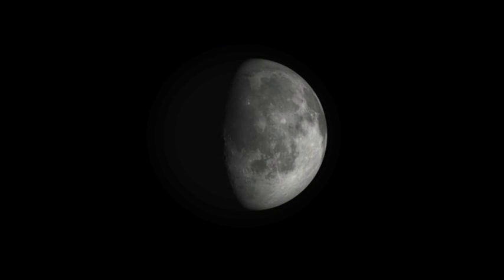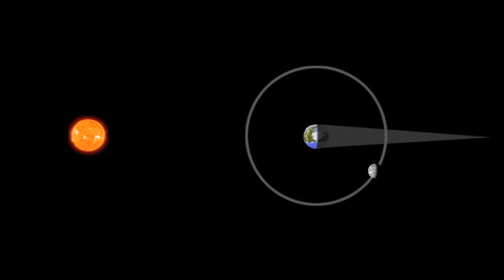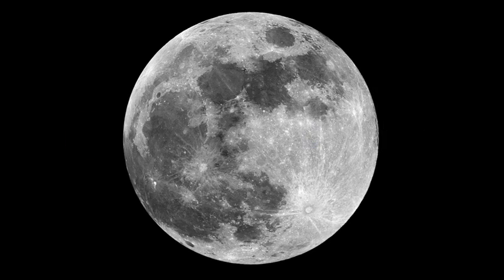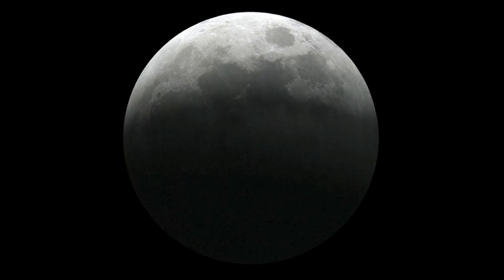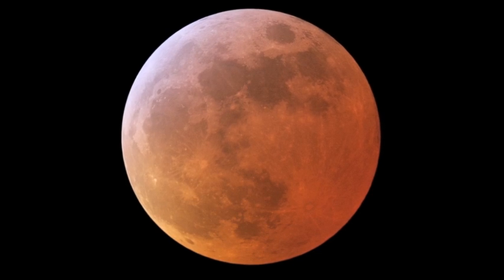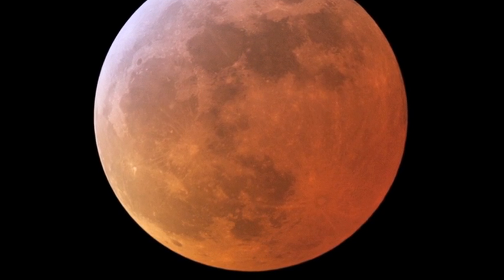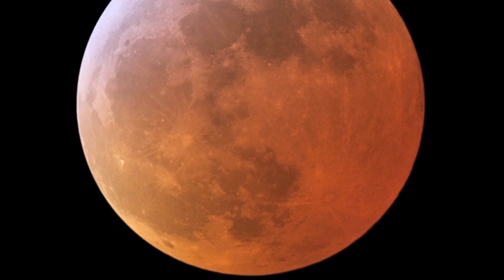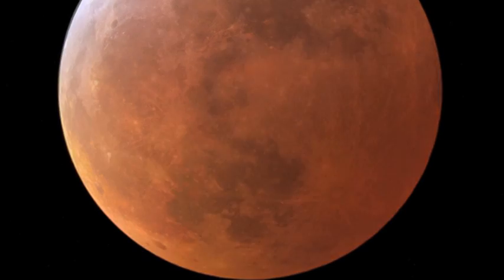During what astronomers call a lunar eclipse, the alignment of the earth, moon, and sun can result in the earth briefly blocking most sunlight getting to the moon. Some of the sunlight does make it to the lunar surface, but it is filtered by the earth's atmosphere and also slightly bent. This causes the sunlight reflected from the moon during a lunar eclipse to often appear red.